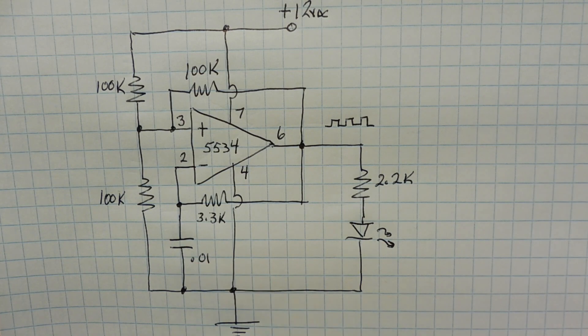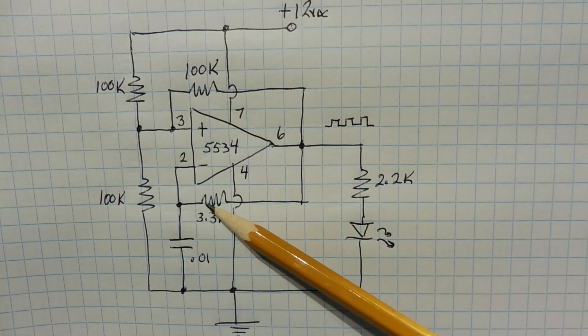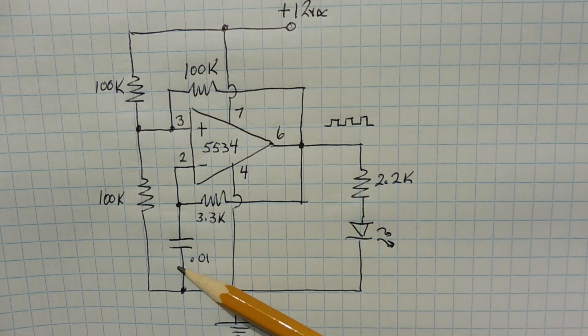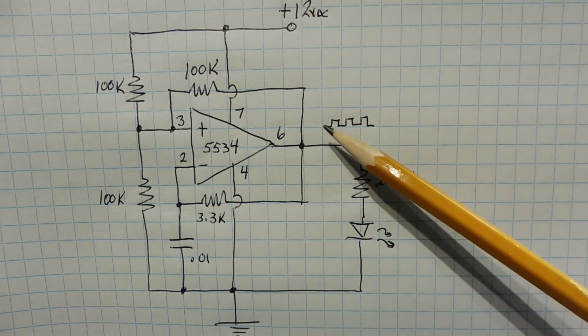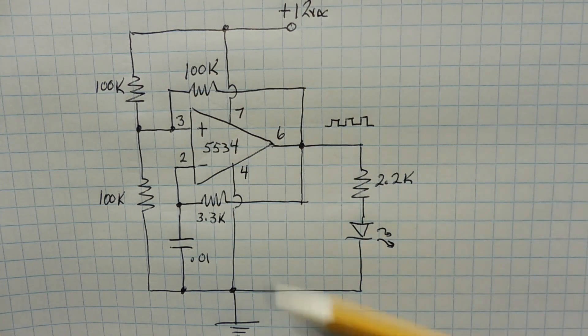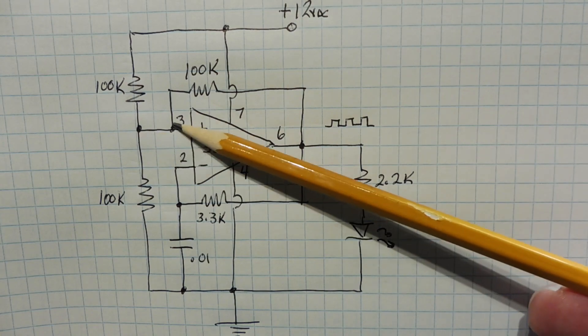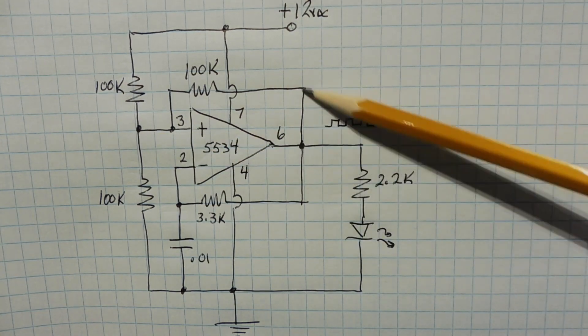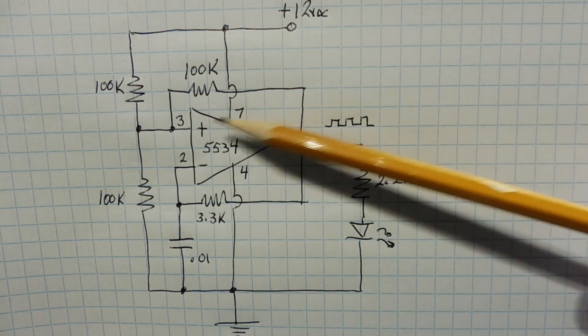Now this R and C determine the output frequency, so 3.3 kΩ and 0.01 microfarad C will give us 20 kHz output. We have a voltage divider of 100k each, and the output is feeding pin 3 of the op-amp. And we have a feedback resistor of 100k from pin 6 to pin 3.